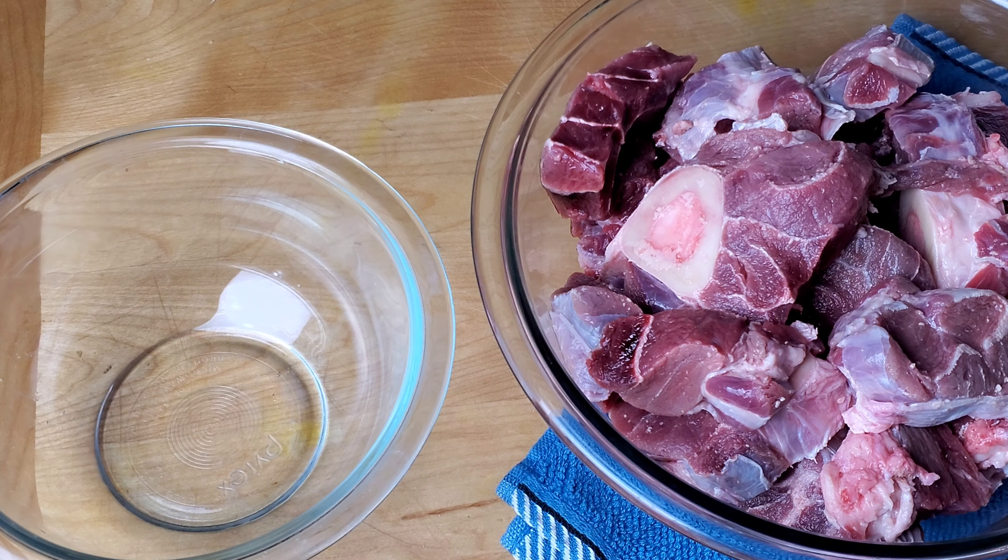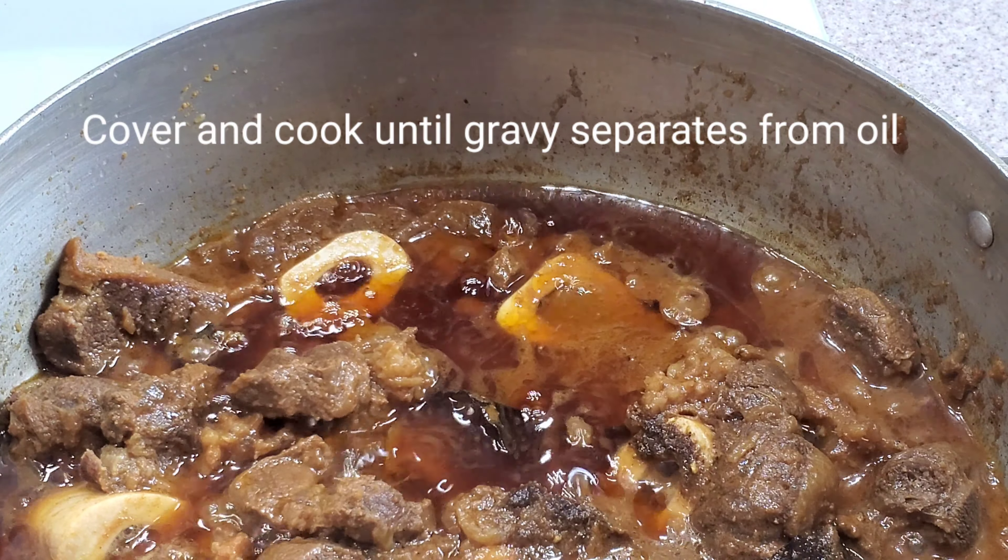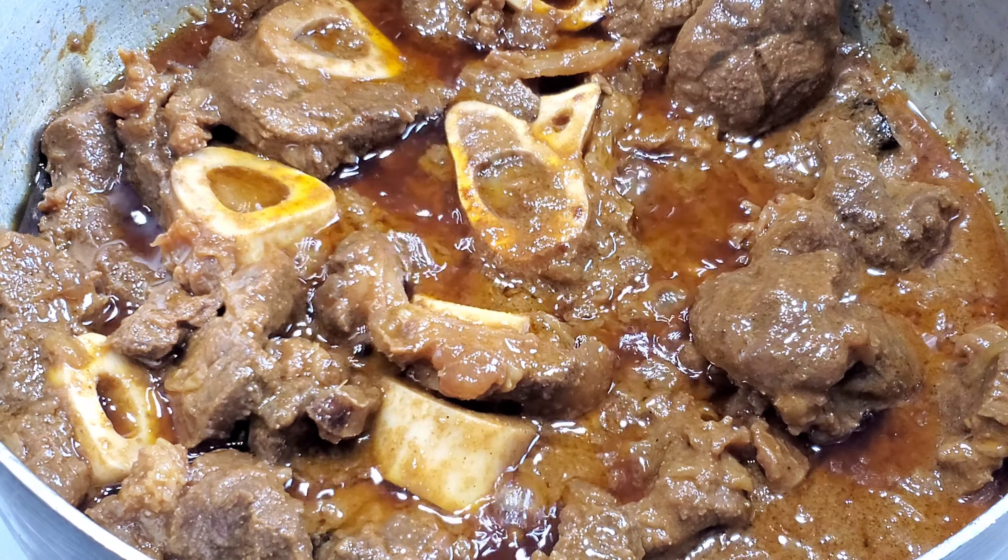Now add the marinated meat and cook on medium heat for three to four minutes. The meat will release a lot of water. Keep stirring occasionally and cook covered for about 30 minutes until the oil starts to separate from the gravy.